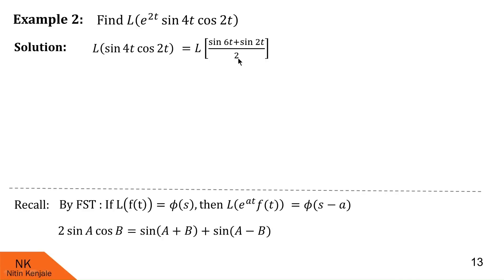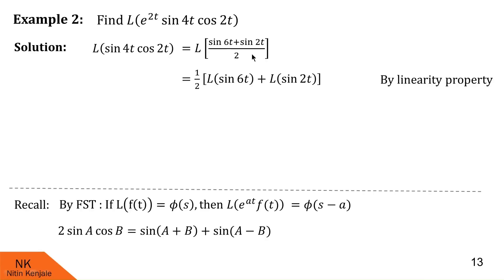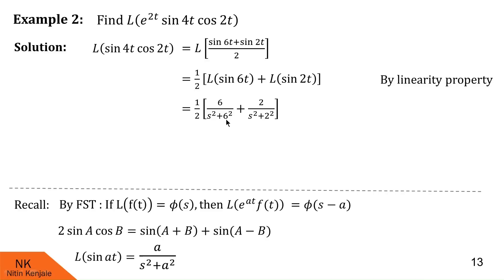Using linearity property, we take 1/2 outside and write Laplace of sin 4t cos 2t as 1/2 times [Laplace of sin 6t + Laplace of sin 2t]. Recalling Laplace of sin at = a upon s squared plus a squared, Laplace of sin 6t is 6 upon s squared plus 36, and Laplace of sin 2t is 2 upon s squared plus 4. We call this entire expression phi of s, where f of t is sin 4t cos 2t.